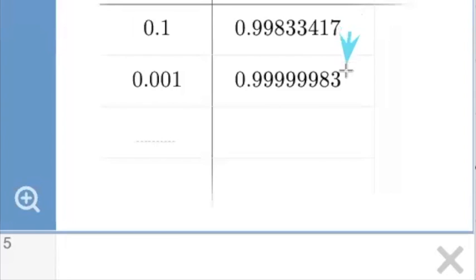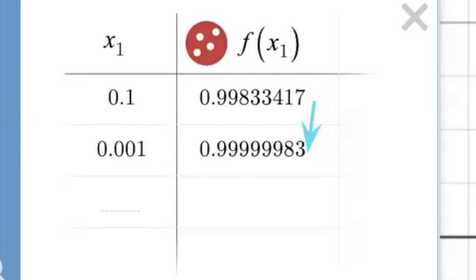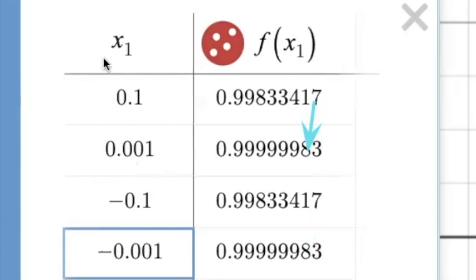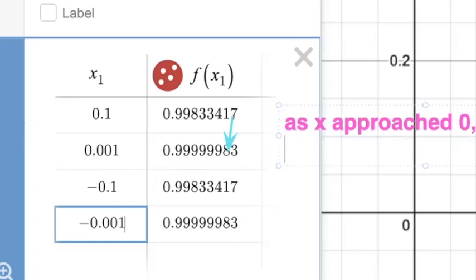It's not just a single value. Now we have to test it on the other side as well, so let's also do it for negative 0.1, negative 0.01. What's important here is the change. As x approached zero, y approached one.